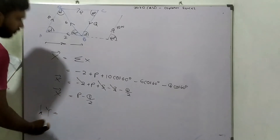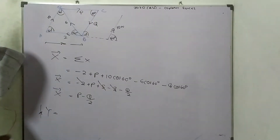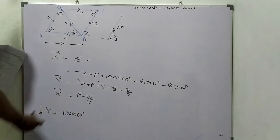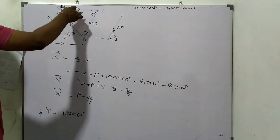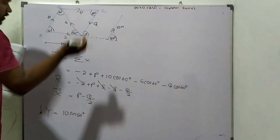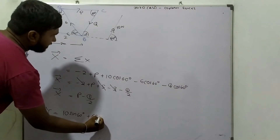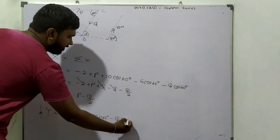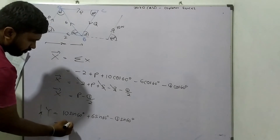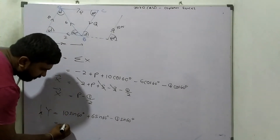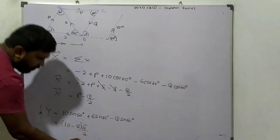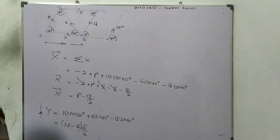And the y-component: 10 sin 60. The 2 is not coming, P is not coming. Plus 6 sin 60, Q sin 60, which gives 16 minus Q, times root 3 over 2.